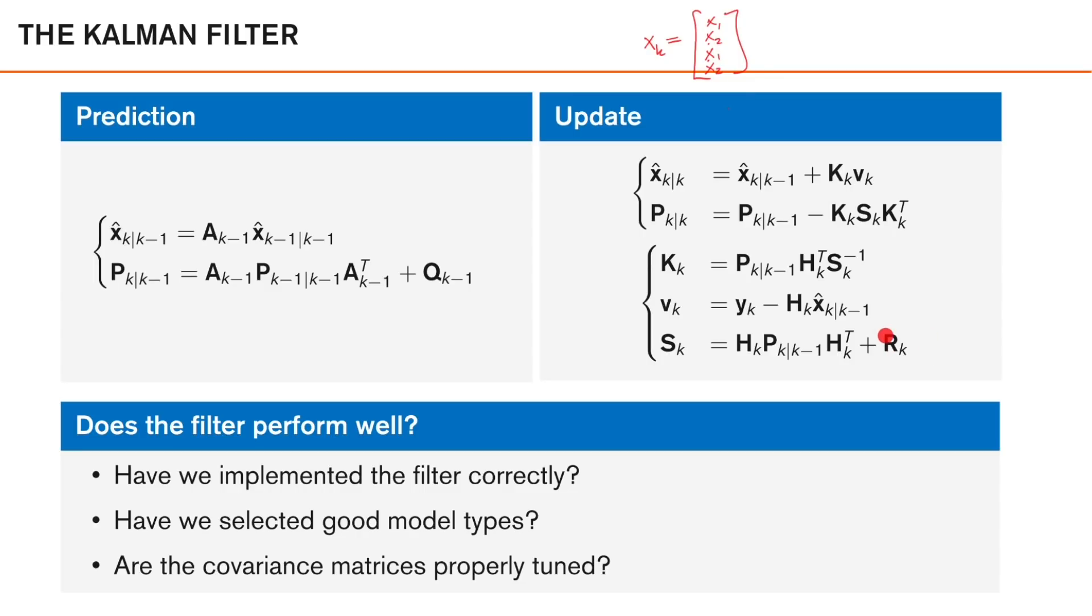So given that we somehow made all these choices, how do we know that the filter performs well? First of all, have we implemented the filter correctly? Or are there errors in our code? Secondly, have we selected appropriate models and state representations for our problem? There are usually several different ways to represent what we're interested in. For example, if we want to track a vehicle in front of us, do we just describe the position of the vehicle? Or do we also include the velocity and acceleration vectors? What we choose will affect the type of motion model that we can have, and the goal should perhaps be that we should have as accurate models as possible, while keeping the complexity to a reasonable level. And we will discuss these trade-offs more in the coming lecture. And lastly, but perhaps most importantly, are the covariance matrices properly tuned? That is, is the amount of process noise and measurement noise just right for the problem? In this lecture, we will give some tools for how to answer these questions.